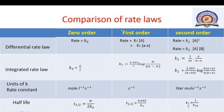A comparison of rate laws for zero, first, and second order reactions is now presented. The differential rate laws are: zero order — rate = k₀; first order — rate = k₁·[A] (i.e., k₁·(a−x)); second order (equal initial concentration) — rate = k₂·[A]²; second order (unequal) — rate = k₂·[A]·[B].